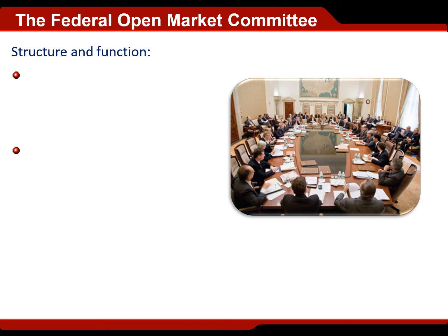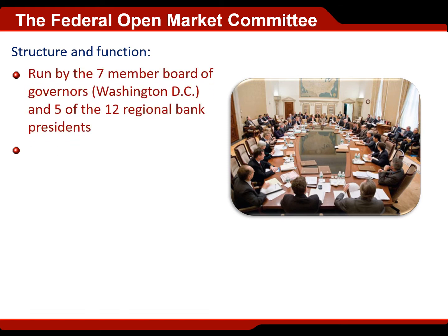The most important part of the Fed is the group that conducts monetary policy, called the Federal Open Market Committee, or the FOMC for short. The FOMC is run by those seven governors and the chairman, but they're joined by five of the 12 regional Federal Reserve bank presidents. There are Federal Reserve banks spread out all across the country. Each of these 12 Federal Reserve banks has a president, and the president of each bank has a role to play in shaping monetary policy. But only five of them at a time get to actually cast a vote on monetary policy decisions.